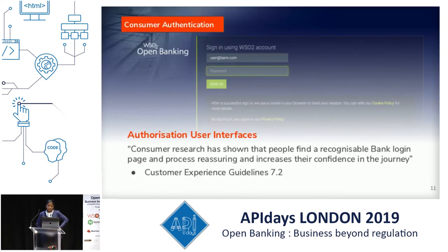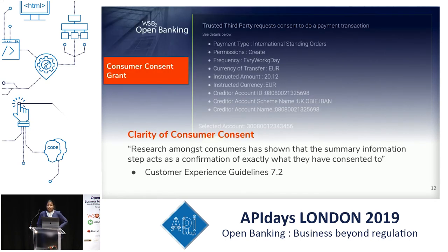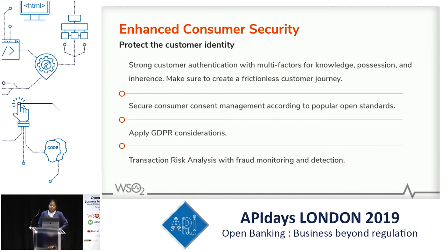For example, when a new API version comes and the API consumer is not acknowledged prior, they won't have lead time to change their integration points. Banks need proper acknowledgement mechanisms — notifications about lifecycle management changes — and the lifecycle needs to be properly managed with enabling workflows. The next important thing is consumer authentication, that is, bank customer authentication. From the Open Banking UK customer experience guideline, a bank customer feels more trust toward the bank if the user authentication page and multifactor authentication pages are recognizable.